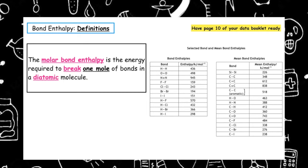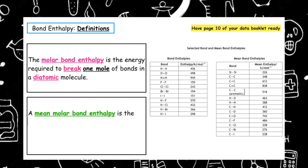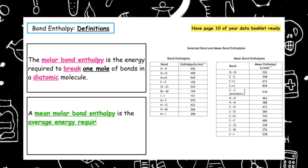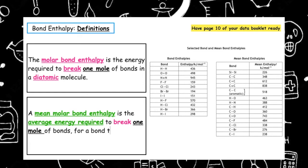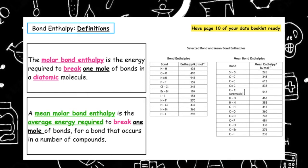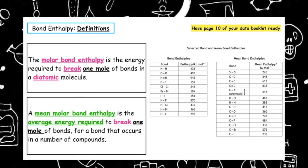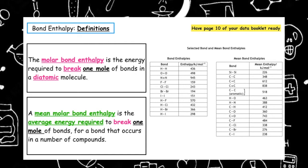A mean molar bond enthalpy is the average energy required to break one mole of bonds for a bond that occurs in a number of compounds. The second column of the data booklet shows us the energy required to break one of those types of bonds in a compound.